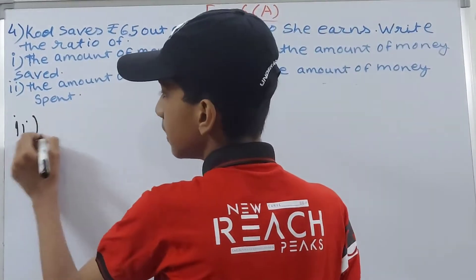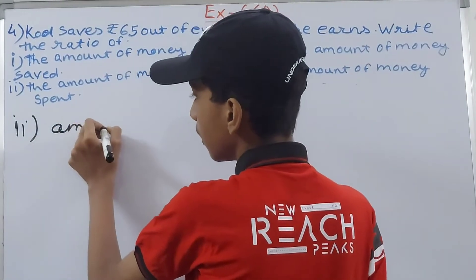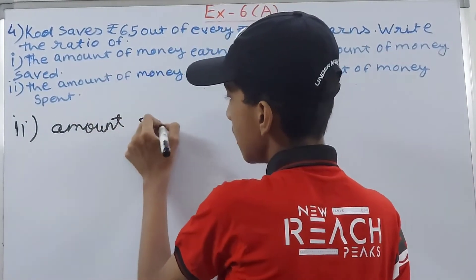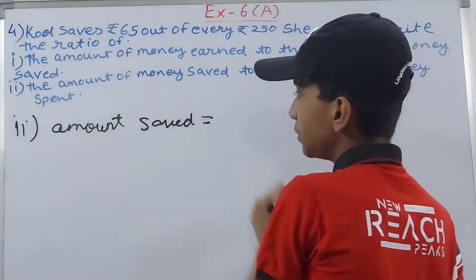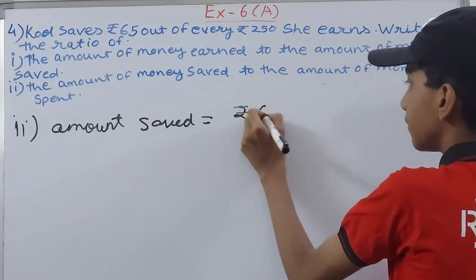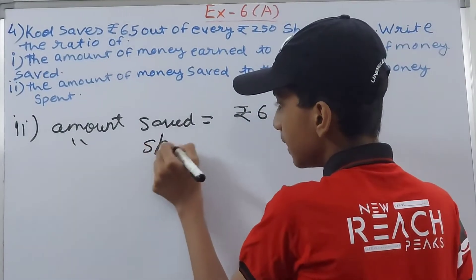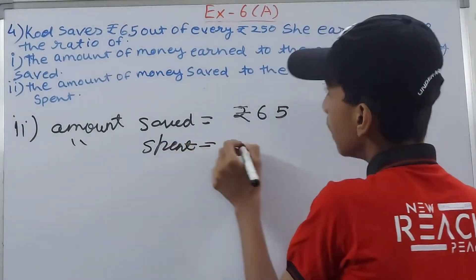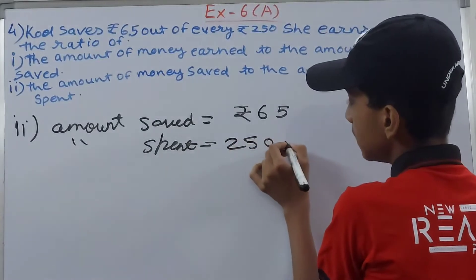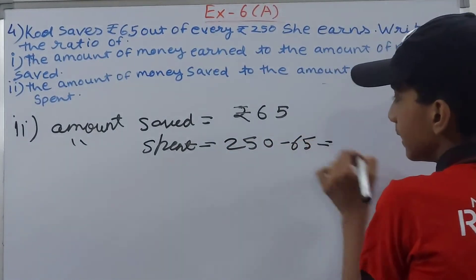First of all you write here that amount saved was how much - rupees 65. And amount spent is how much? 250 minus 65 and that is going to be 185 rupees. So 185 rupees was spent.